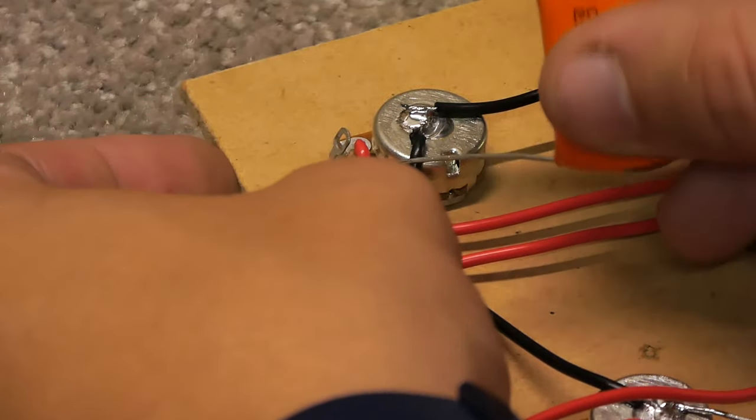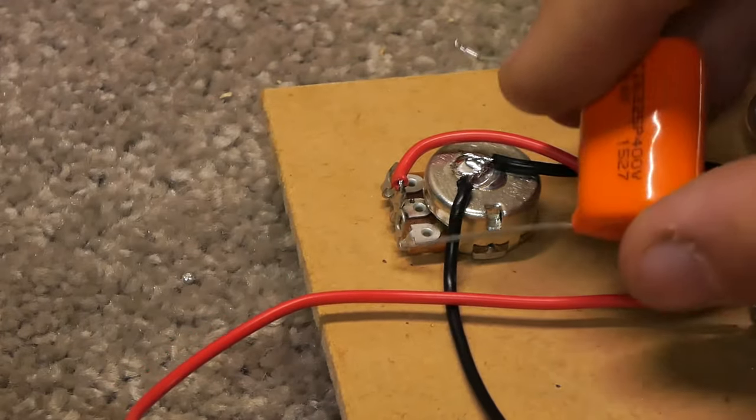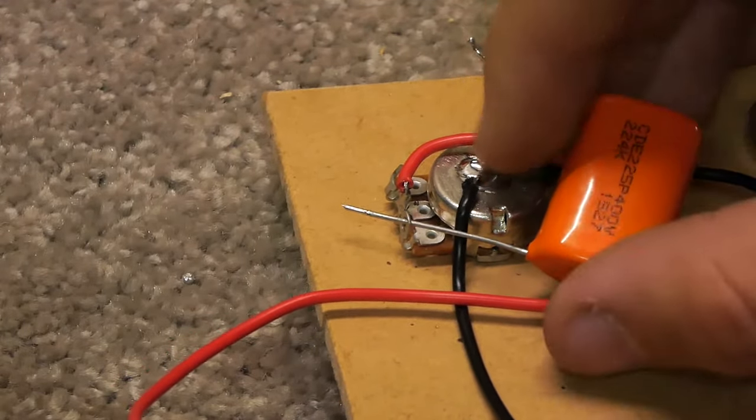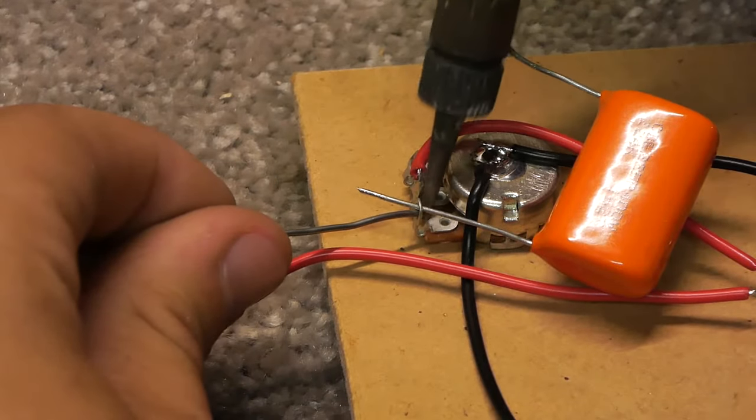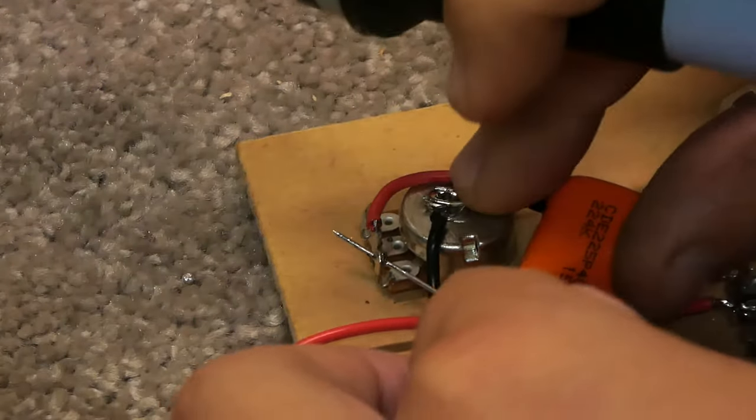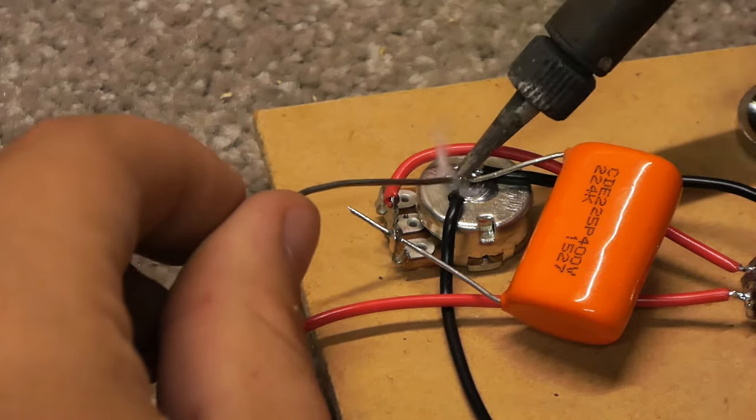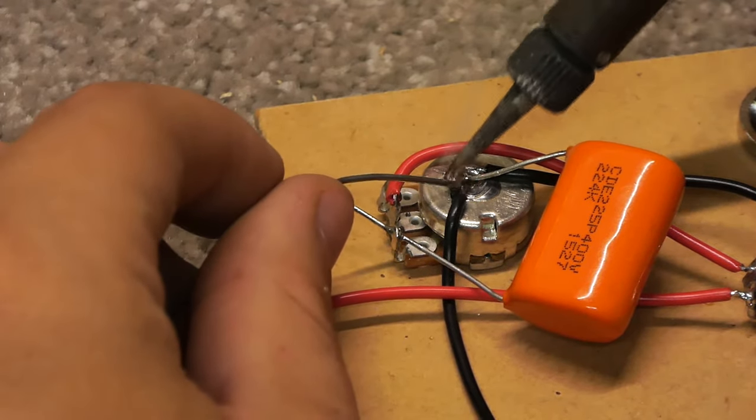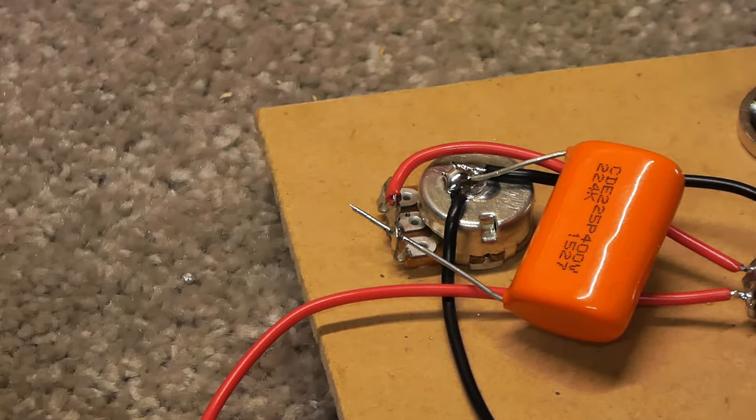Now, you want to do the exact same thing on the other tone capacitor. So, again, get these out of the way. Now, you want to shove it through the right-hand leg again. Again, a bit of solder on it. Then, you want to bend the leg, put the bit of solder on, so it's connecting to all the other ground wires on the back. And then, you're all good. You now have your capacitors soldered on.